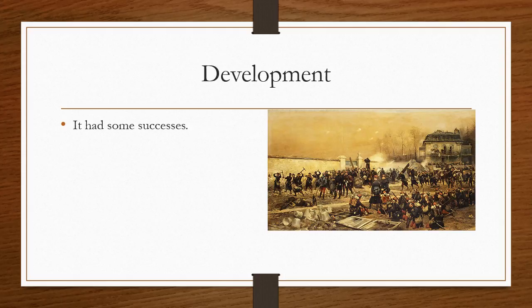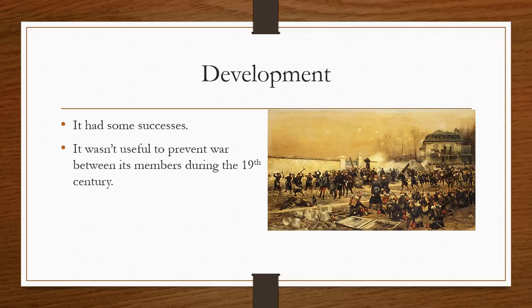As for the development: this system of alliances had some successes, for example in dealing against the liberal revolutions in Spain. But it wasn't useful in preventing war between its members during the 19th century. There were different wars related to various conflicts, such as the Crimean War, the Eastern Question, and the Franco-Prussian War. Traditionally, it is considered that this system of alliances ended with World War One.